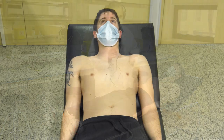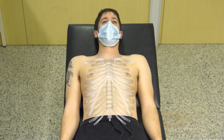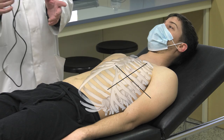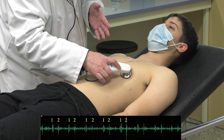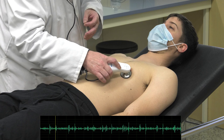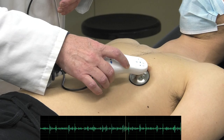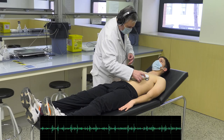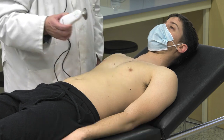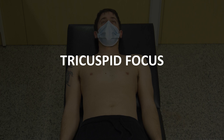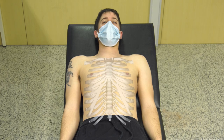We are going to proceed to auscultate each of the cardiac foci. We start with the mitral focus, located at the intersection of the left mid-clavicular line with the left fifth intercostal space — the apical beat zone. The tricuspid focus is located at the xiphoid appendix or at the sixth right chondrocostal joint.